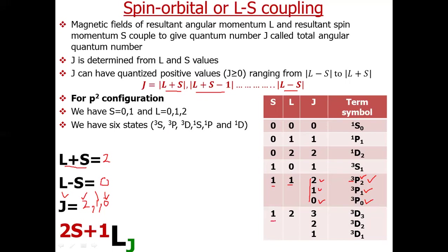For S = 1, L = 2: L+S = 1+2 = 3 and L−S = 2−1 = 1. So J = 3, 2, or 1, giving three term symbols: 3D3, 3D2, and 3D1. This is how we calculate the term symbols for P2 configuration — we get a total of 10 term symbols.